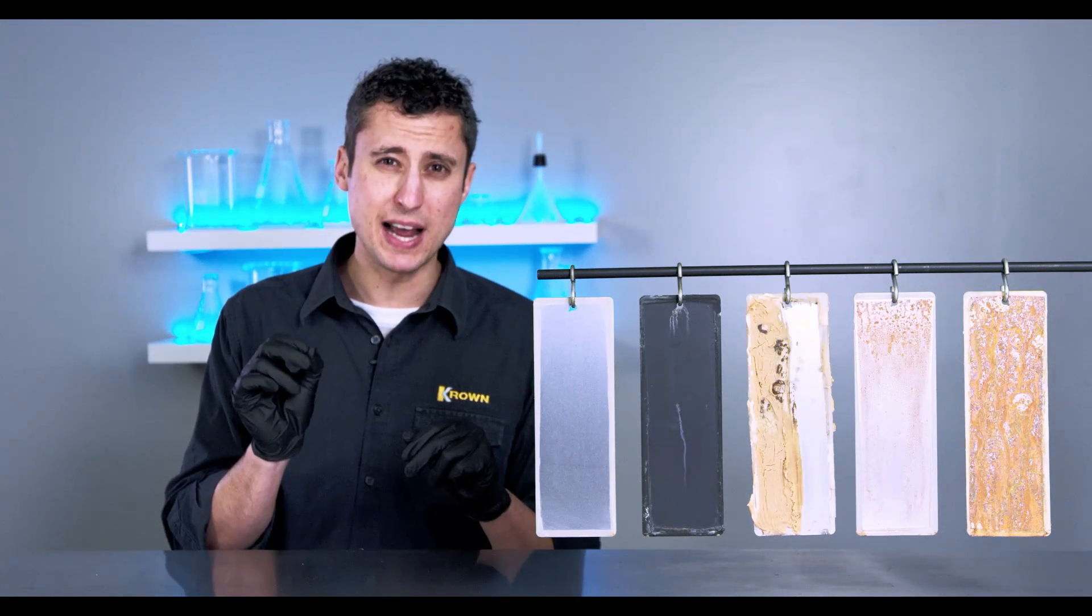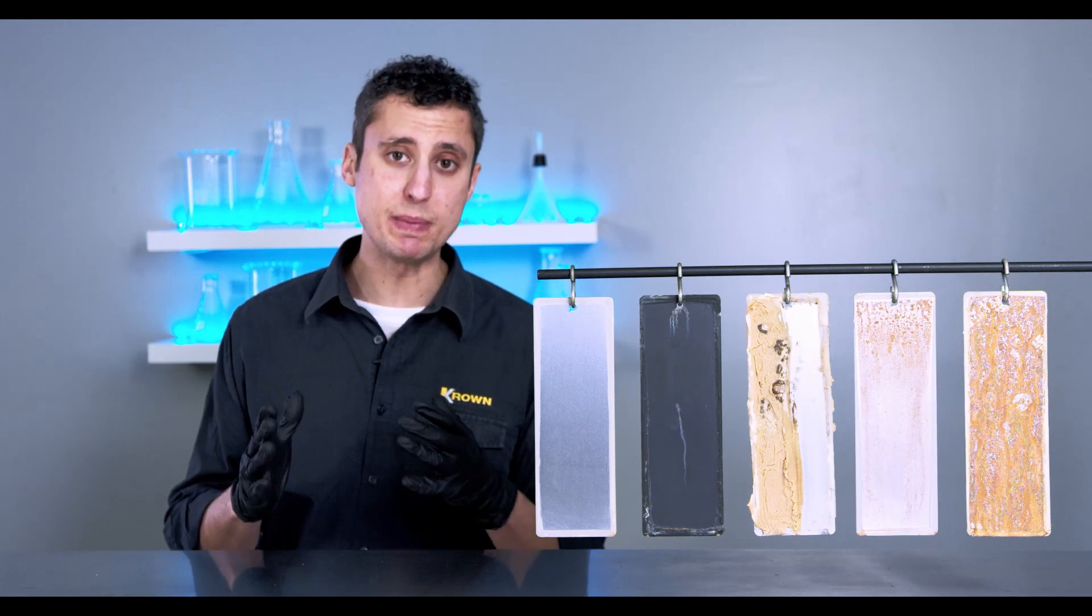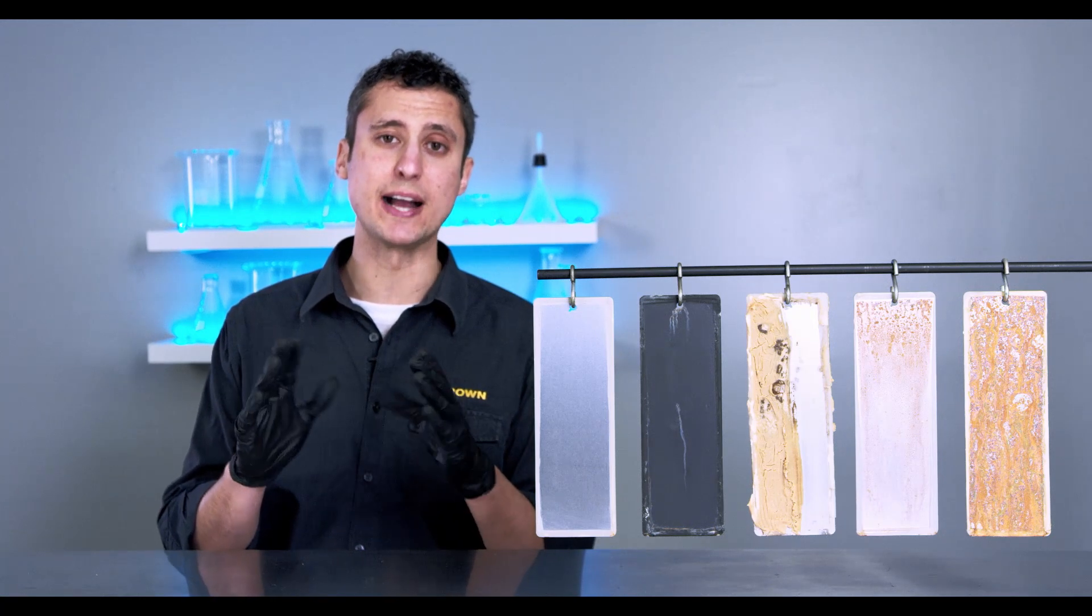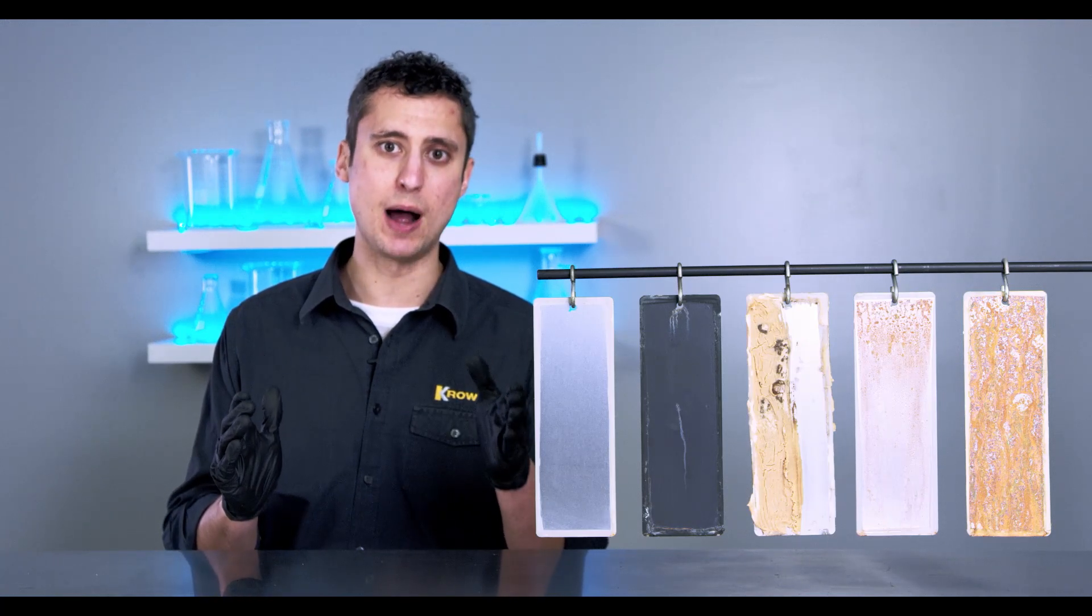For a rust protection product to be effective, it has to be thin enough to be able to creep into all of those areas of your vehicle and create that protective barrier. And that's exactly what the Crown product does.